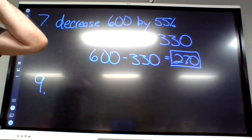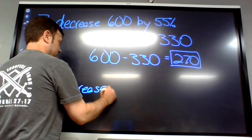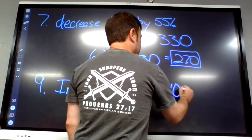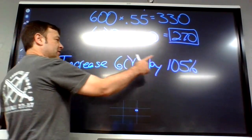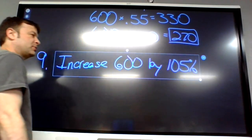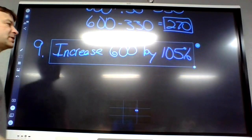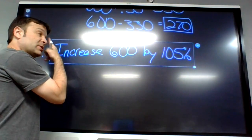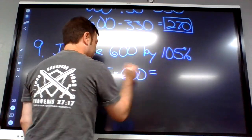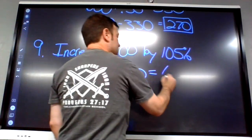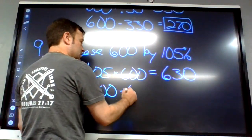Increase 600 by 105 percent. If you increased by 100 percent you'd get 1200, so expect something slightly more. What's 105 percent as a decimal? 1.05 times 600 equals 630. But adding that to 600 gives 1230.